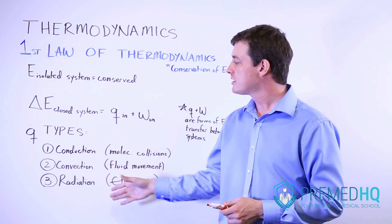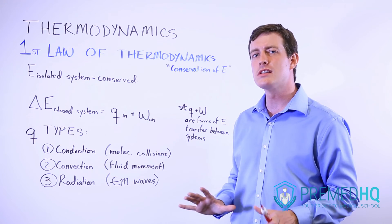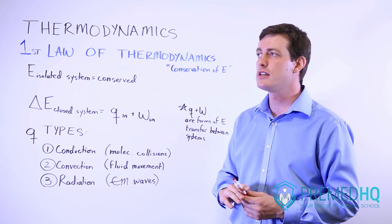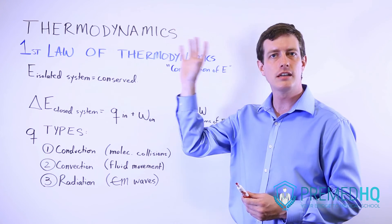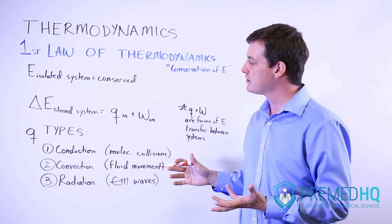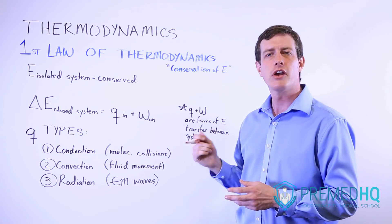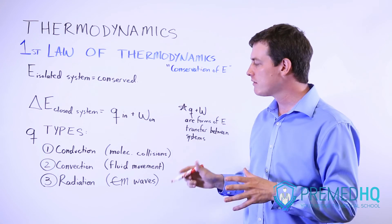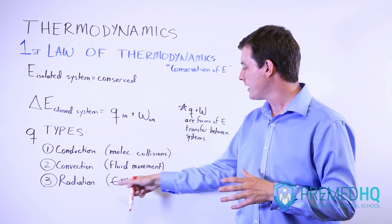And finally, the third type is radiation. And you'll only see this two places. Radiation is given off by the sun and that's a very common one. And the other place you see radiation is with a very hot piece of metal. Both of those give off electromagnetic waves.